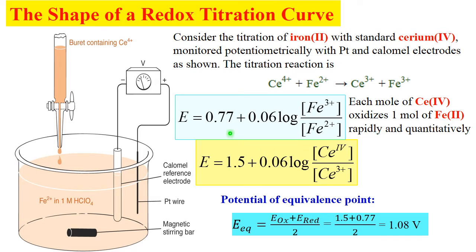There are two Nernst equations that are relevant to this story. First is Nernst equation concerning iron 3+ and iron 2+ ions. E = 0.77 plus 0.06 log ratio of these two ions. We have seen this Nernst equation before.